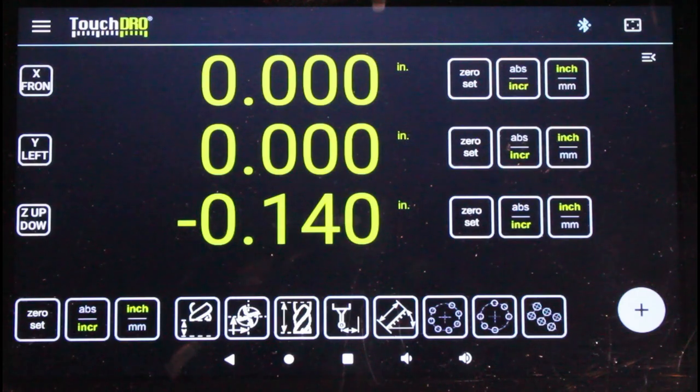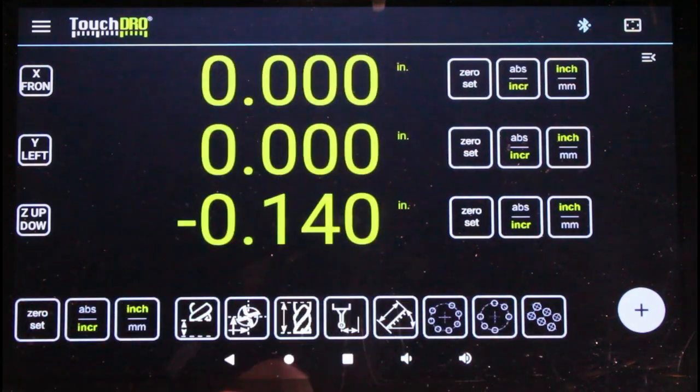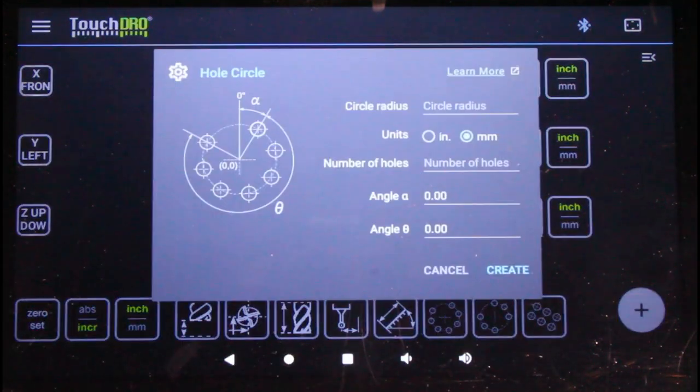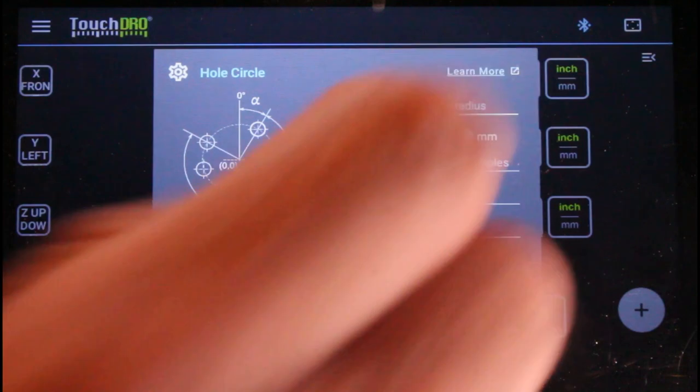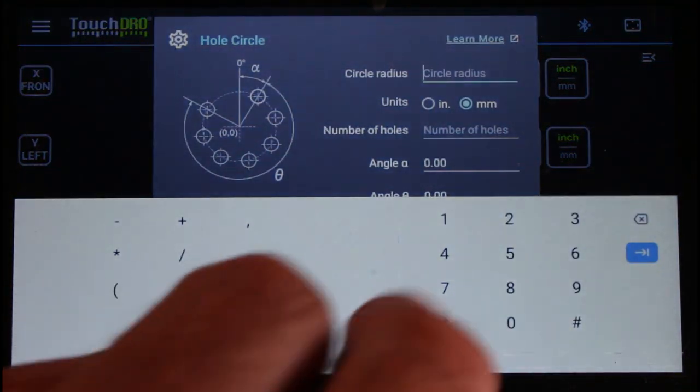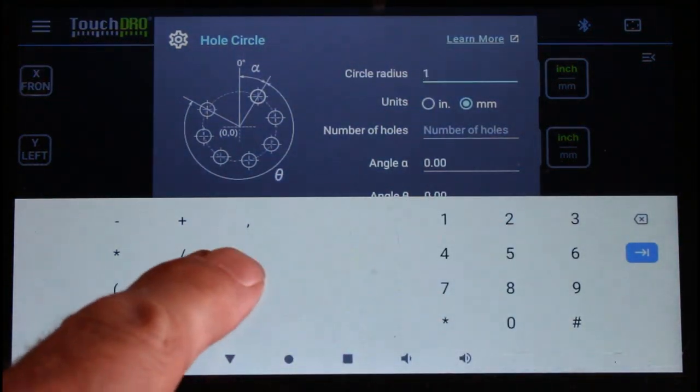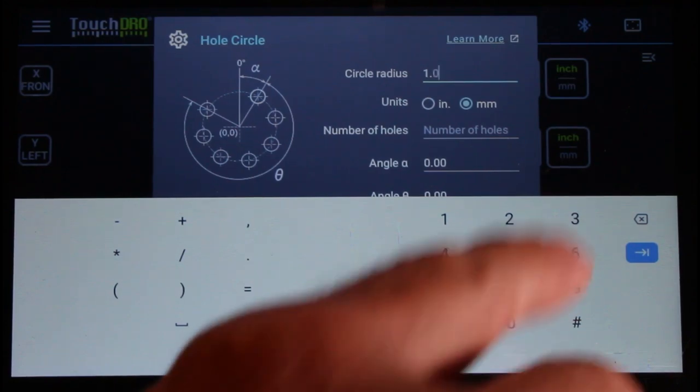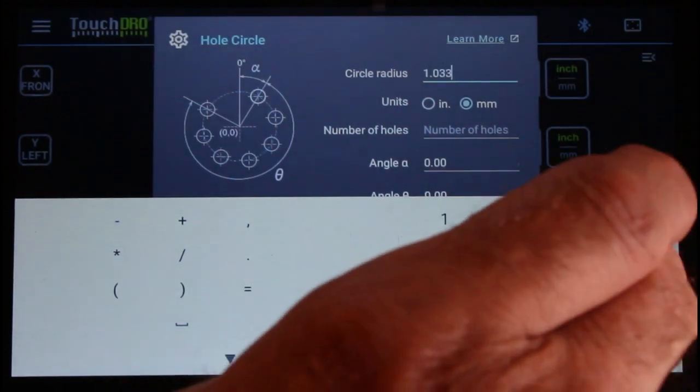Over on the milling machine, I've got my TouchDRO set up on the left side of my machine. What I need to do is set up a circle pattern. So I'm going to punch that button right there. Set the radius, which I happen to have as 1.033, so it's one point zero three three.